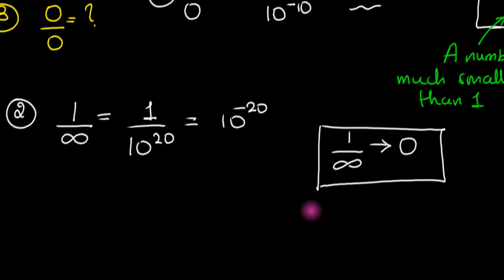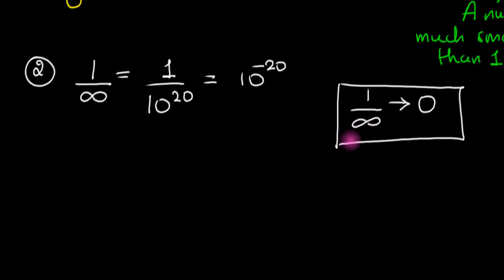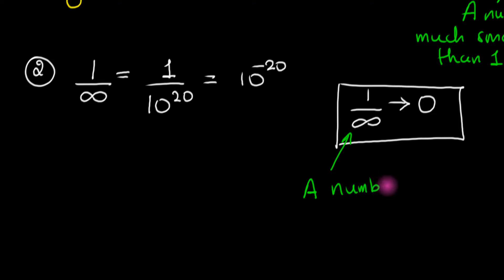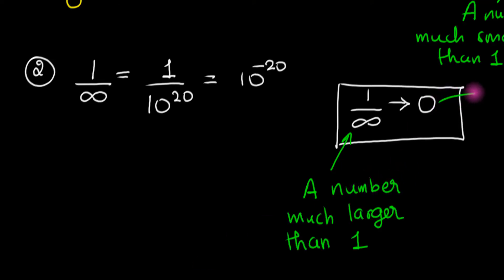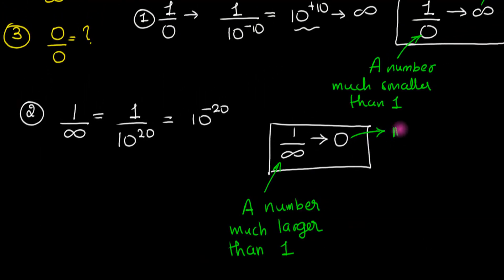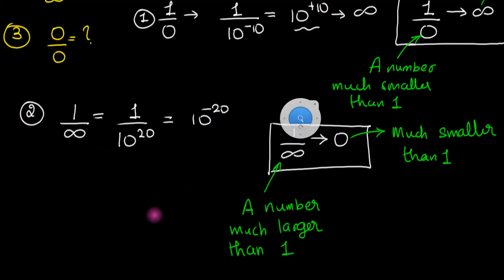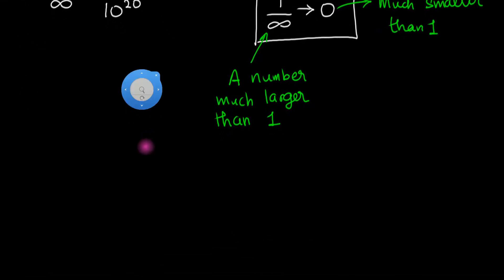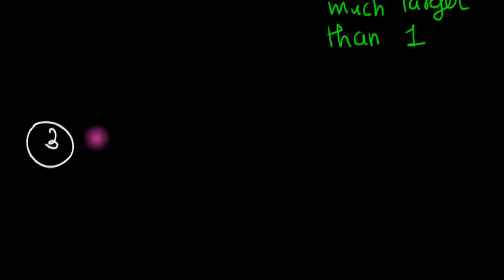That's what this means: if you take 1 and divide by a number much larger than 1, it doesn't matter exactly what that number is — as long as it's much larger than 1, we end up with an answer which is much smaller than 1. We don't know exactly what that number is, but it's going to be much smaller than 1. So far so good — now let's look at question number 3: what is 0 divided by 0?